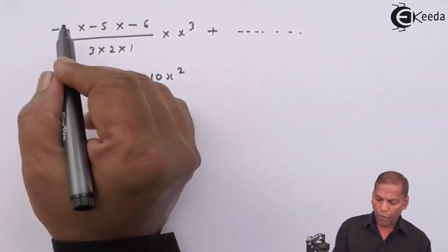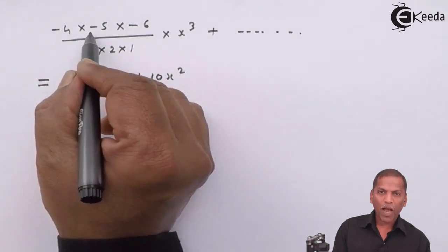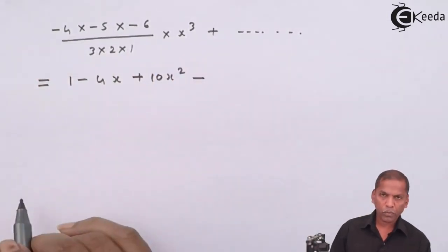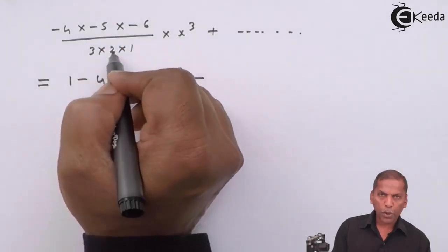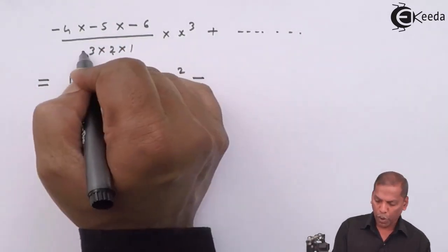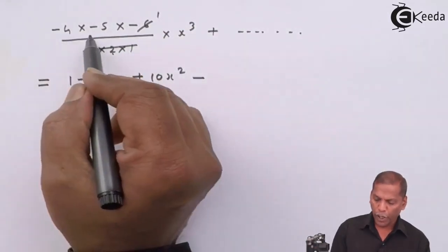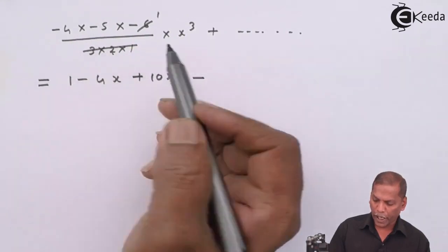Now here minus times minus gives plus, and plus times minus gives minus again. Now 3 times 2 is 6, times 1 is 6, so we cancel with 6 in the numerator. We're left with 4 times 5, which is 20x cube.